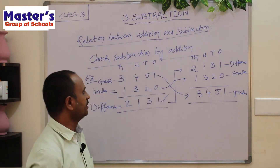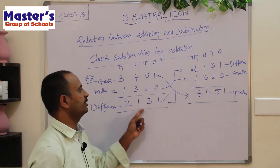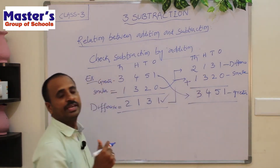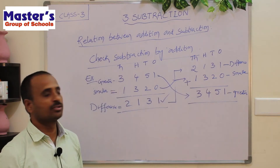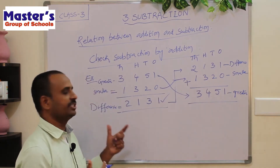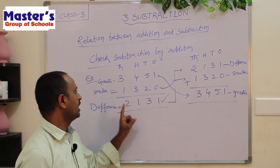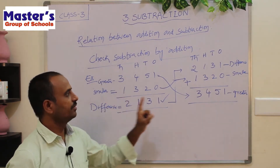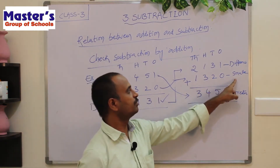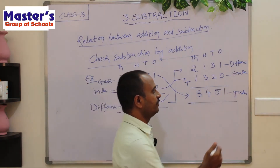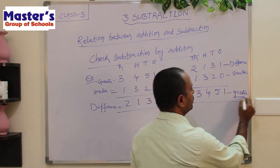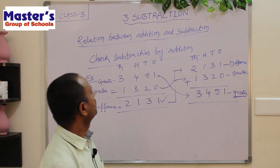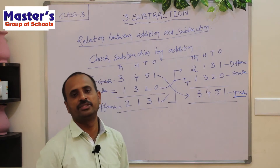So in this way we can check our subtraction by doing addition. We have to add the smaller number to the difference, and then we should get the greater number. This is the checking of subtraction by addition.